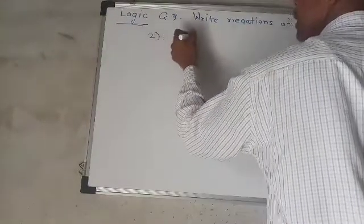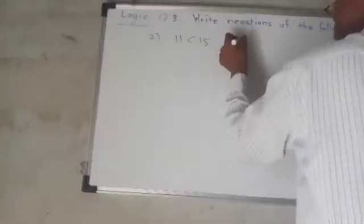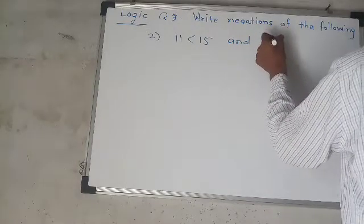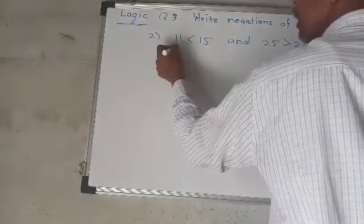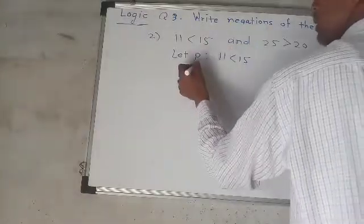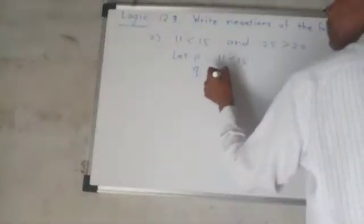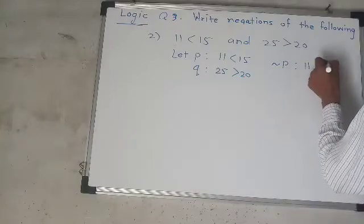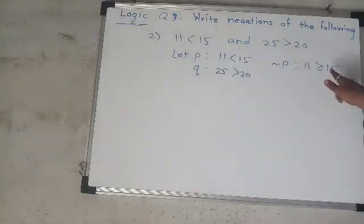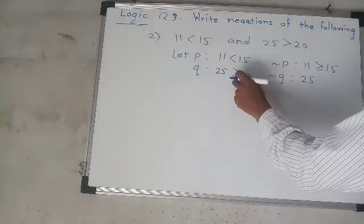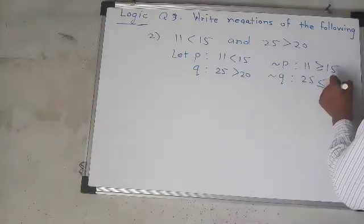Second one: 11 less than 15 and 25 greater than 20. Let P: 11 less than 15, Q: 25 greater than 20. Negation P: 11 greater than or equal to 15. Negation Q: 25 less than or equal to 20.